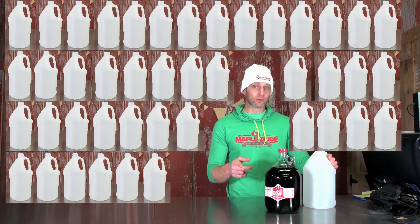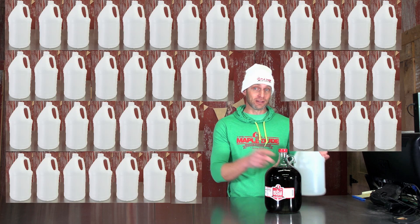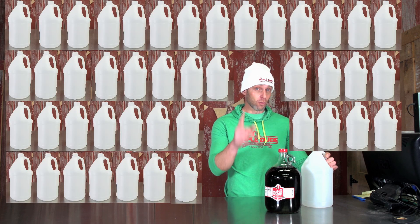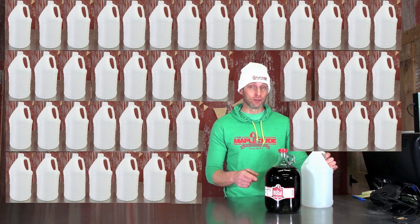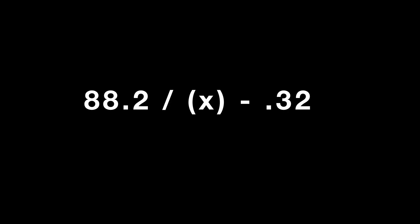But under the new Jones Rule, it's going to actually take almost 44 of these to make one gallon of maple syrup — so one entire gallon more of maple sap at 2% sugar. The new rule is a little bit more complicated and scientific: it's 88.2 divided by X, where X is your sugar content, minus 0.32.